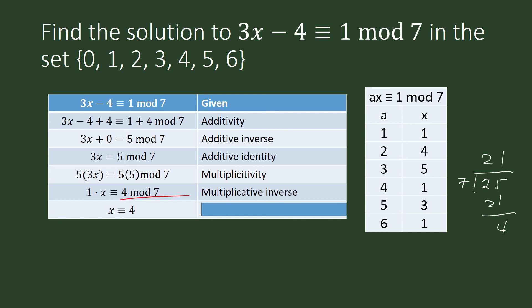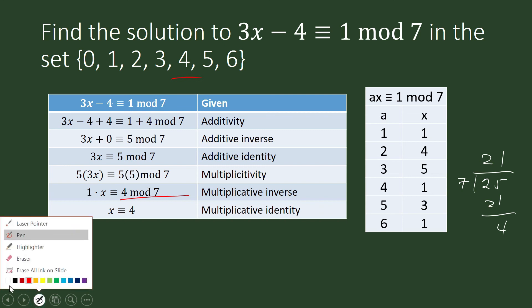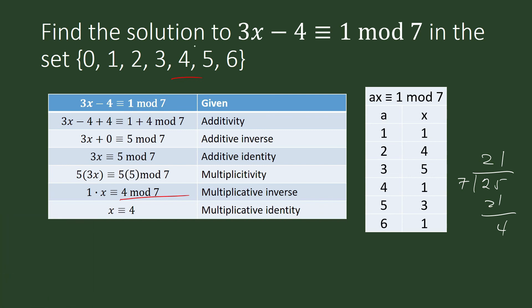Our choice for x in this set is 4, because the only element among them that is congruent to 4 is 4. Let us double check it for x equals 4.